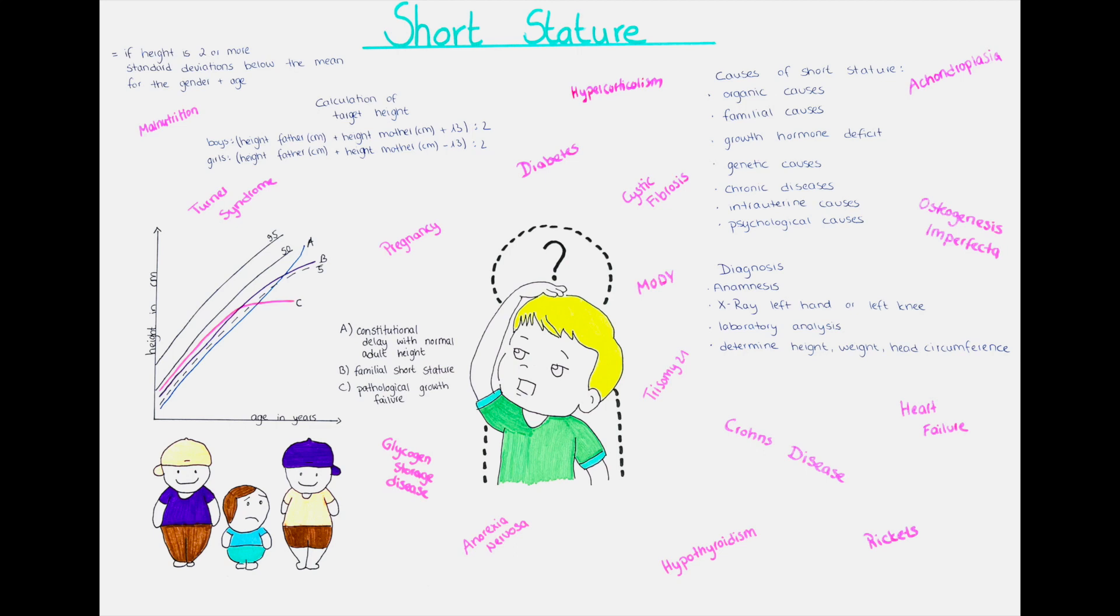Also endocrine disorders can lead to short stature. This includes disorders of the pituitary gland, as a deficit in growth hormone, disorders of the adrenal glands, as hypercortisolism, and disorders of the thyroid gland, as hypothyroidism.